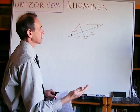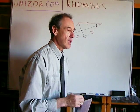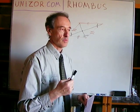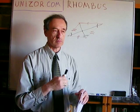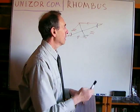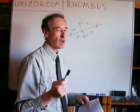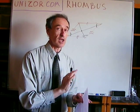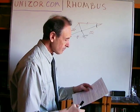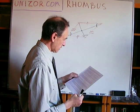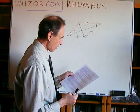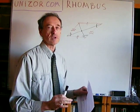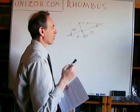Since rhombus is a kind of parallelogram, but now has some additional property — namely all four sides are congruent to each other — we have certain additional properties of the rhombus which are not applicable to general parallelograms. Here they are. I have a couple of theorems. First of all, diagonals of a rhombus are perpendicular to each other. This is a particular property of the rhombus — these diagonals are perpendicular to each other.